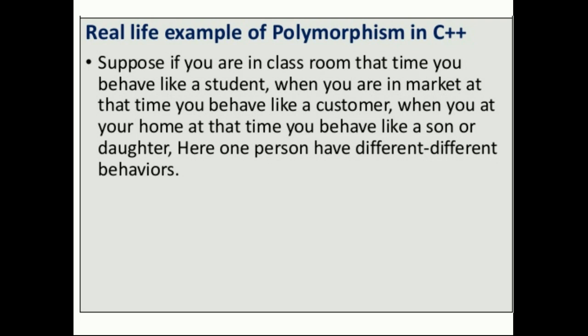In our shop we are going to be a customer. In your home you are going to behave like a person. We behave like an object depending on different behavior. We behave differently, and that is polymorphism — the ability to express different forms. If we behave with different forms, that is polymorphism.